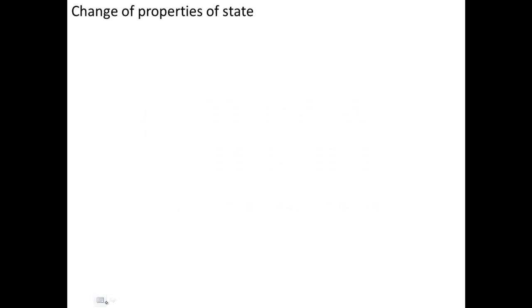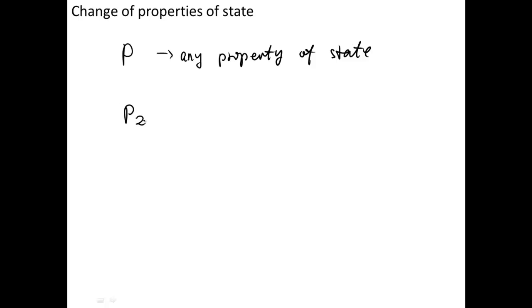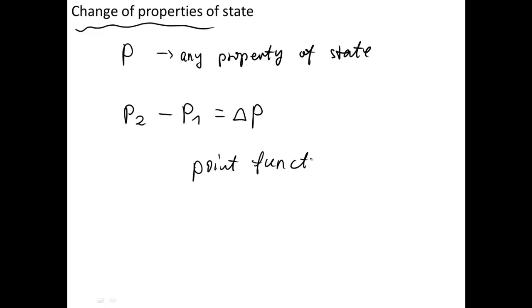Hello everyone. If we want to calculate the change of a property of state, we only need to know the values of properties at both the initial state and the final state. So P indicates any one property of state — for example, P could be pressure, temperature, internal energy, and so on. We let P2 (the property at final state) minus P1 (the property at initial state) to get the change of property. We don't care how the properties reach their final states. This is a vital characteristic of a point function — that is, path independent.